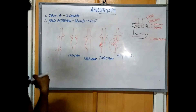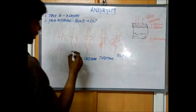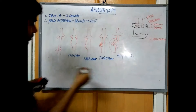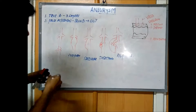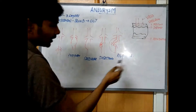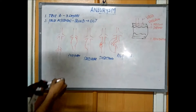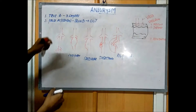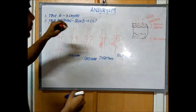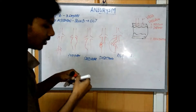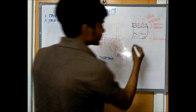We discussed these four types: fusiform, saccular, dissecting, and rupture. Now, what are the causes which make aneurysm? The first one is atherosclerosis.